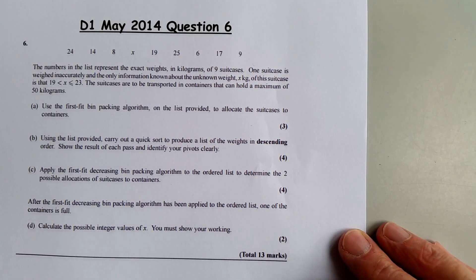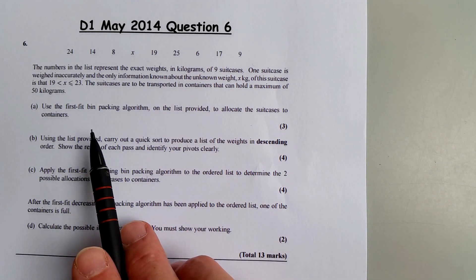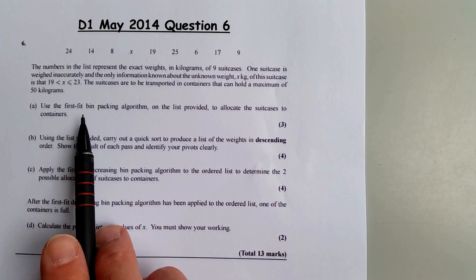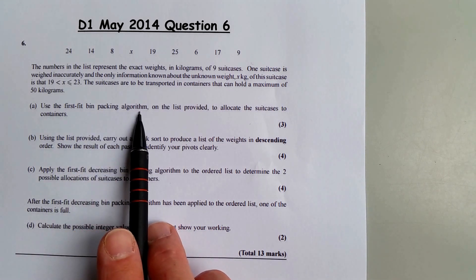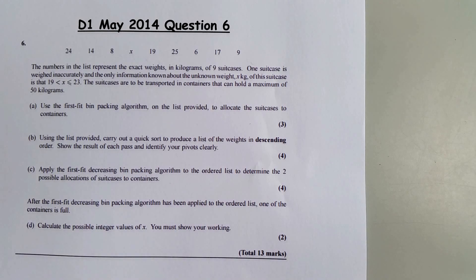Okay, question six. Part A is about bin packing. It says use the first fit bin packing algorithm on the list provided to allocate the suitcases to containers.